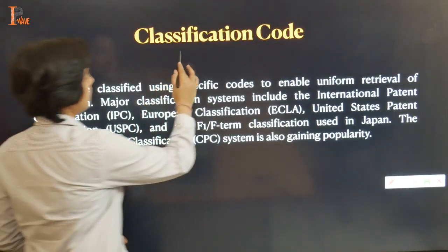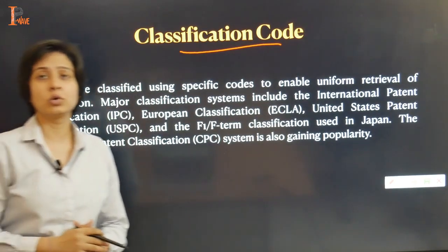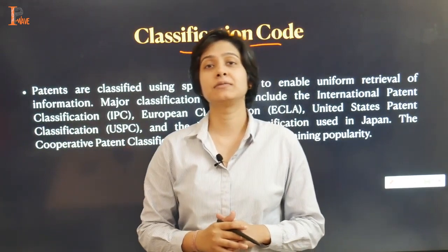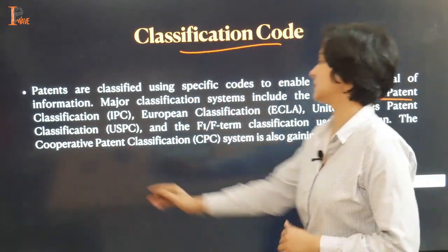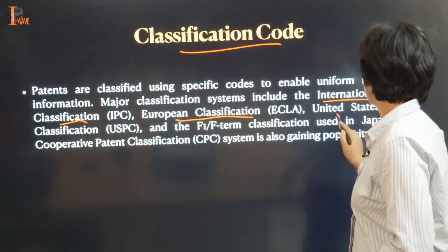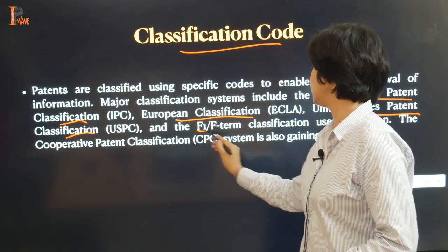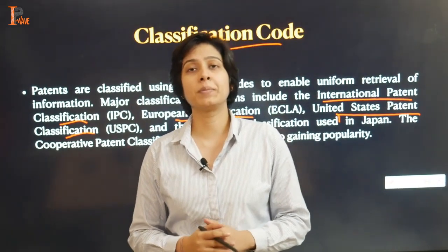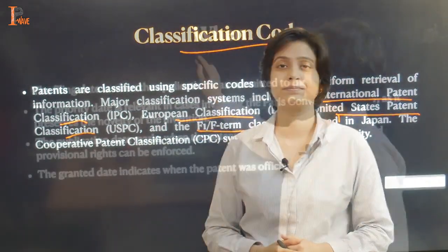Next, we will look at classification codes. Patents are classified using codes to enable uniform retrieval of information. Major classification systems include International Patent Classification, European Classification, United States Patent Classification, and the F1F term classifications used in Japan. The Cooperative Patent Classification system is also gaining popularity.